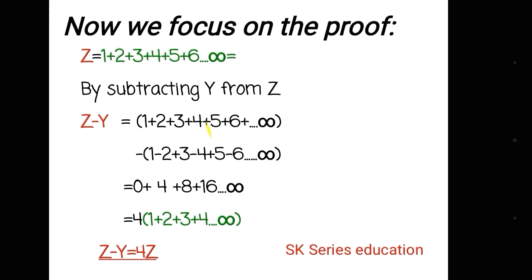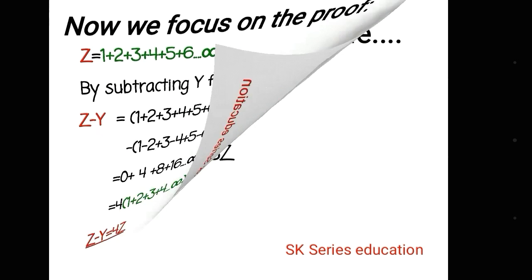+4 minus of -4 equals to 8. That means if I take 4 common from this equation, that means 4 times the whole equation. That means Z - Y = 4Z.